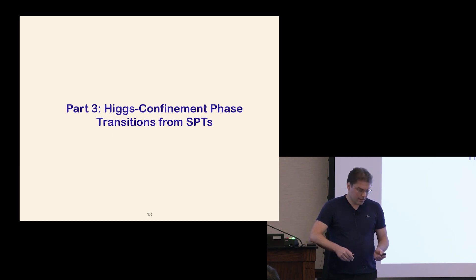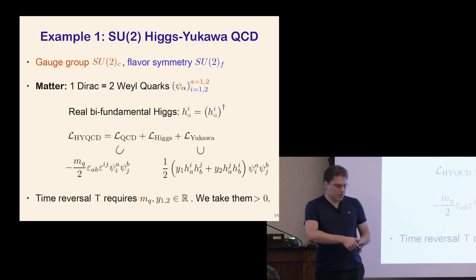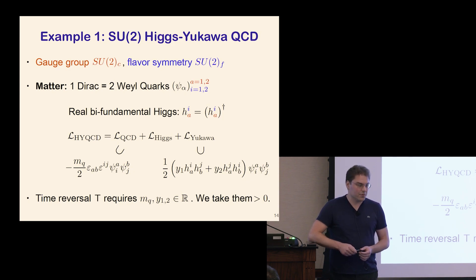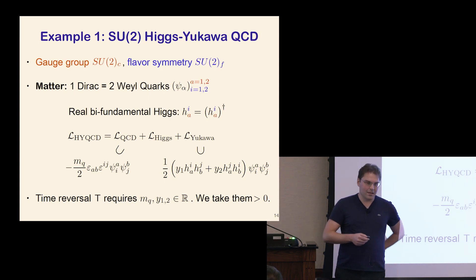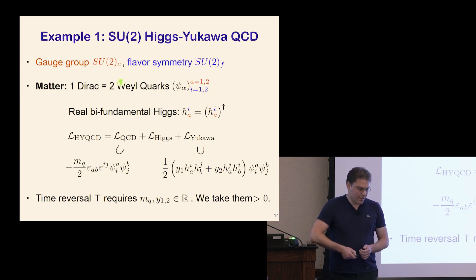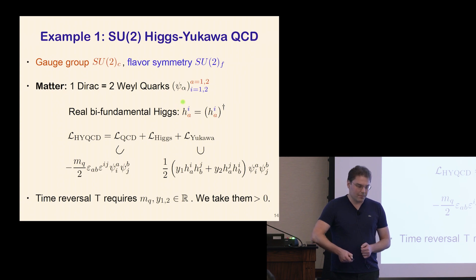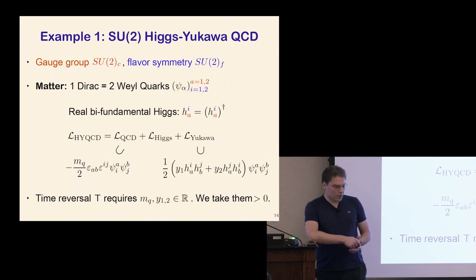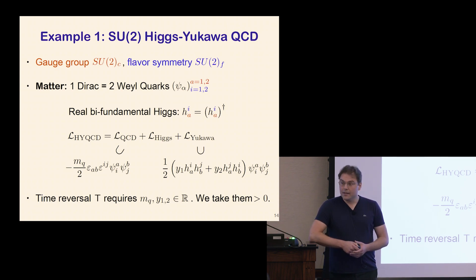Let's look at progressively more complicated examples of Higgs confinement transitions detectable using SPTs. This simple example uses SU(2) gauge group, motivated by the basic example of Demopoulos and collaborators. It's basically SU(2) QCD with a single Dirac flavor — written as two Weyl quarks ψ_α, with a red gauge index A running from 1 to 2, and an SU(2) flavor symmetry with a blue flavor index I also running from 1 to 2.